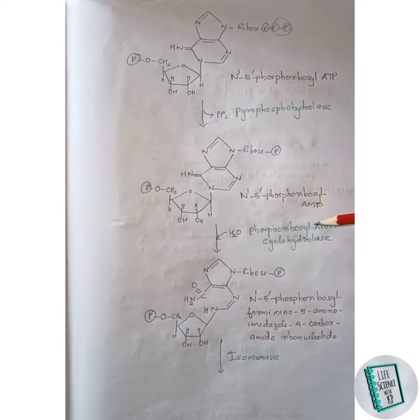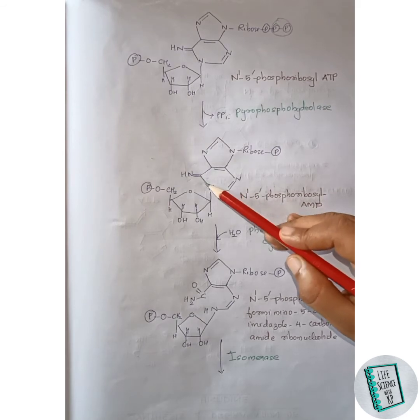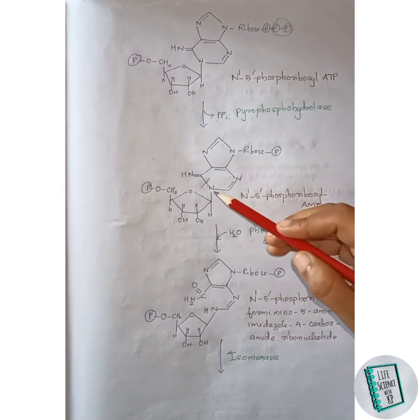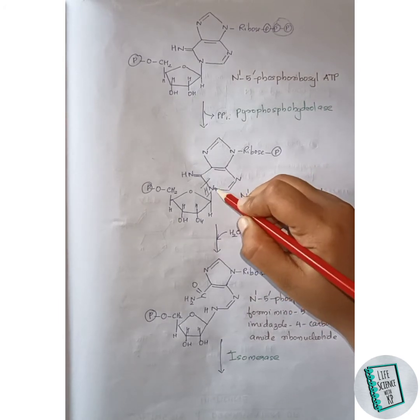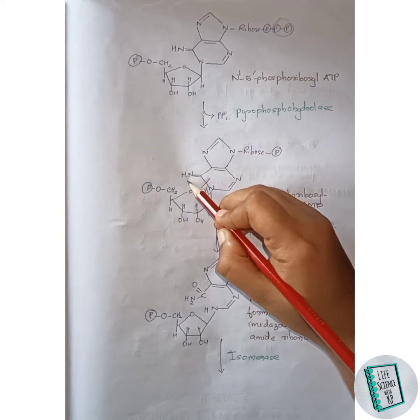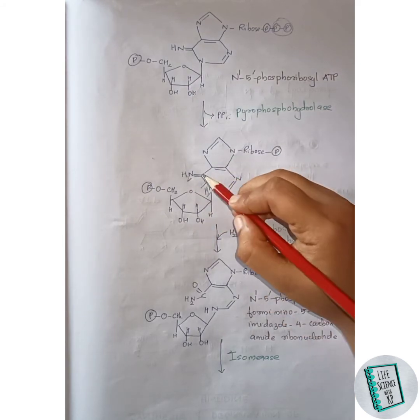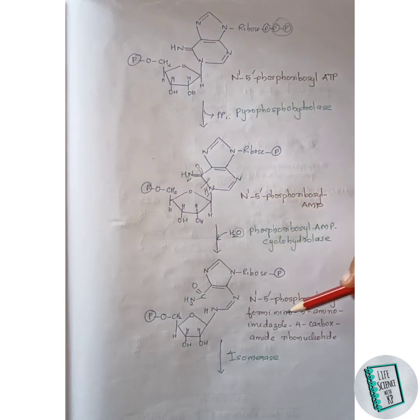In the next step, N1-5'-phosphoribosyl AMP in the presence of phosphoribosyl AMP cyclohydrolase forms N1-5'-phosphoribosyl-formamino-5-aminoimidazole-4-carboxamide ribonucleotide. In the presence of water, cleavage occurs between the nitrogen and carbon bond. One hydrogen of the water molecule attaches to the nitrogen forming NH, and the other hydrogen attaches to the adjacent nitrogen forming NH2, while the remaining oxygen binds with the carbon forming a double bond C=O. Thus this structure is formed.